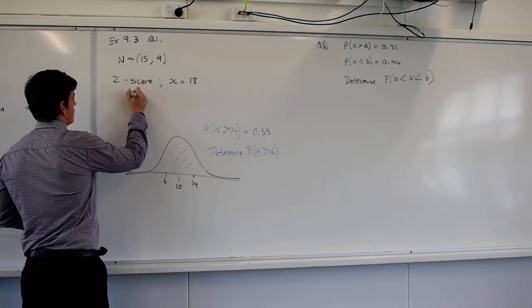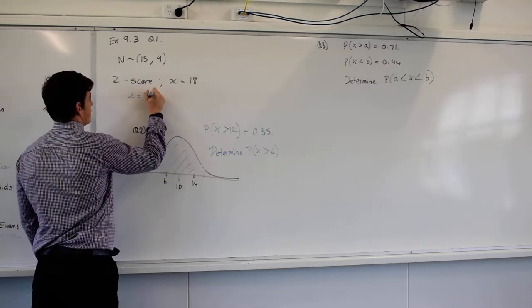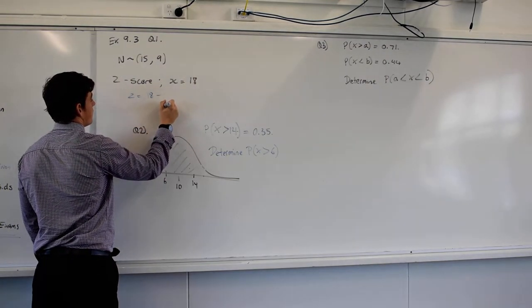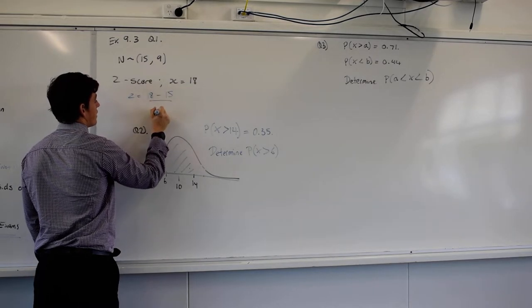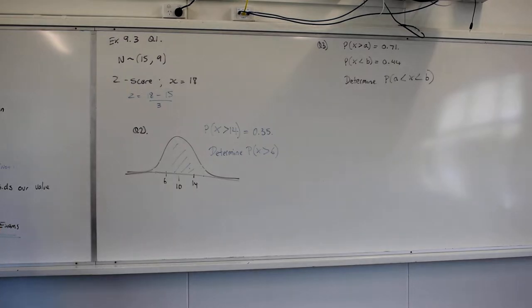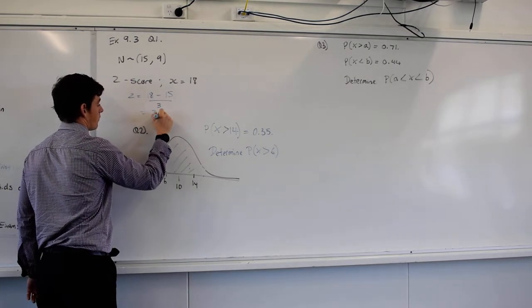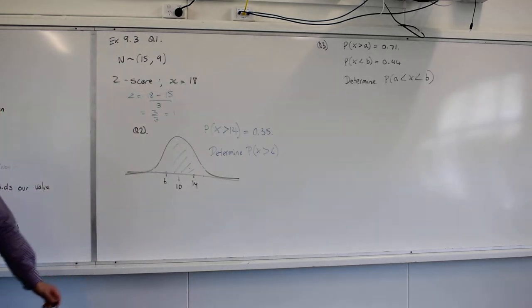So Z equals what's my X value? 18 minus my mean divided by my standard deviation. 18 minus 15 is 3. 3 divided by 3 equals 1.